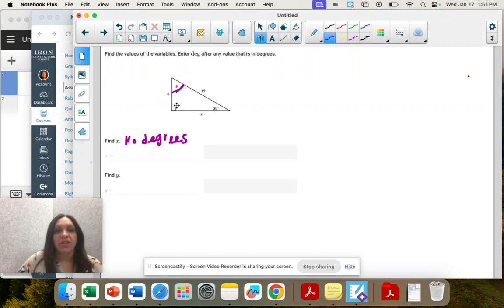So if this is a 90 degree angle, this is 30. What's our last one? Remember, it's a 30, 60, 90.